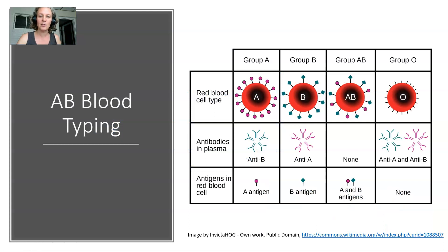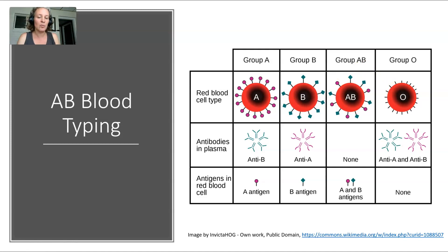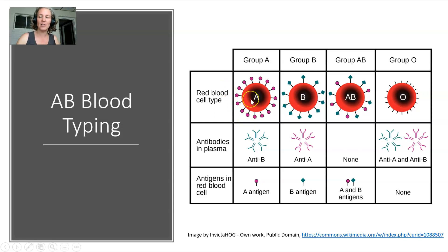Let's look at the ABO ones first. With a red blood cell, when it comes to this particular type of proteins, there are a few choices: it can have group A proteins, it can have group B proteins, it can have both, or it can have neither. Those are your only options within ABO blood typing. If you have group A proteins and your body gets blood with group B proteins, it's going to say no — this doesn't belong here — and it's going to attack them. However, if you get group A proteins, because your body is used to group A proteins, you aren't going to form antibodies to that blood and you're going to be good to go.